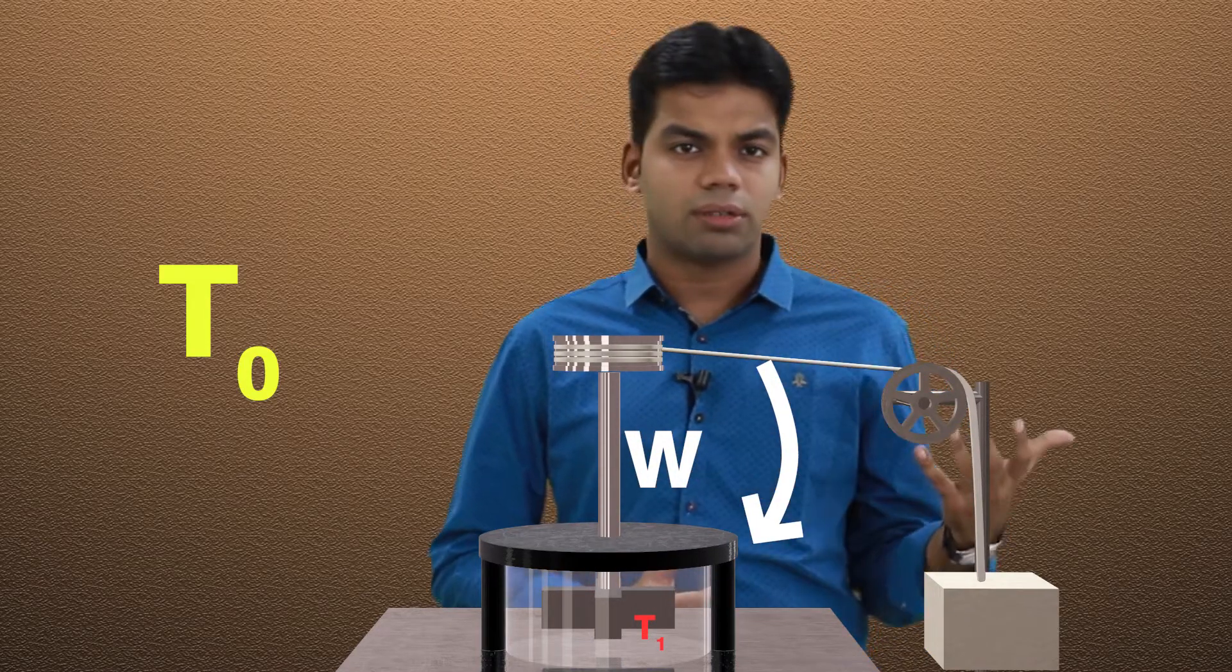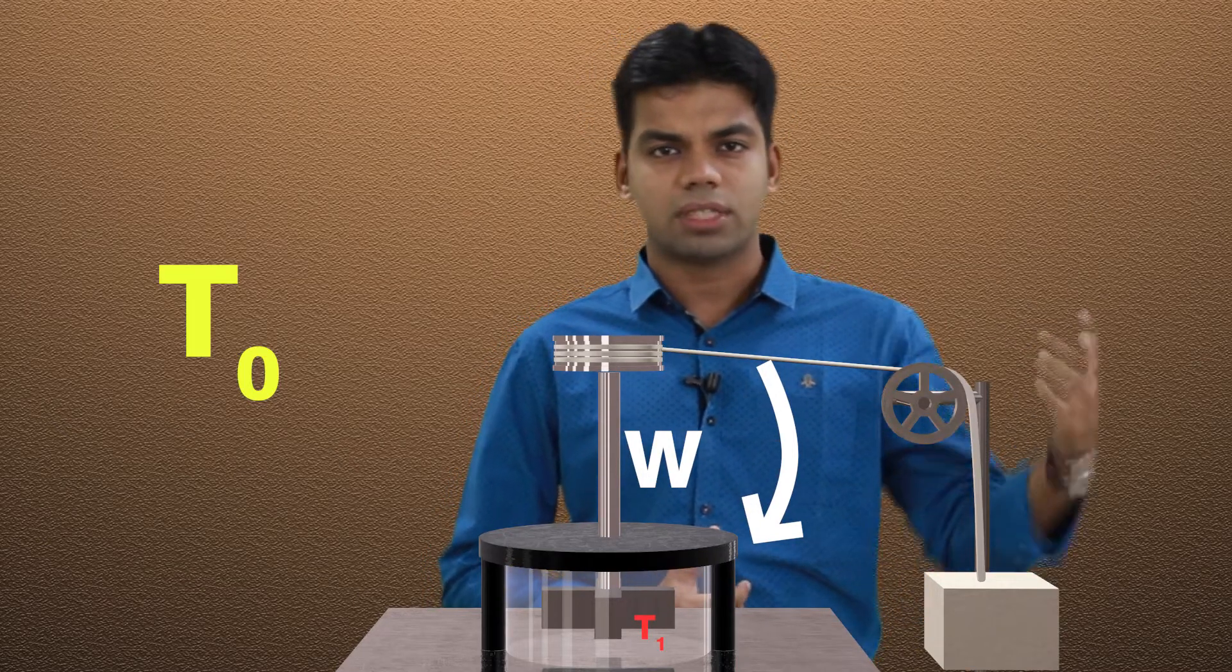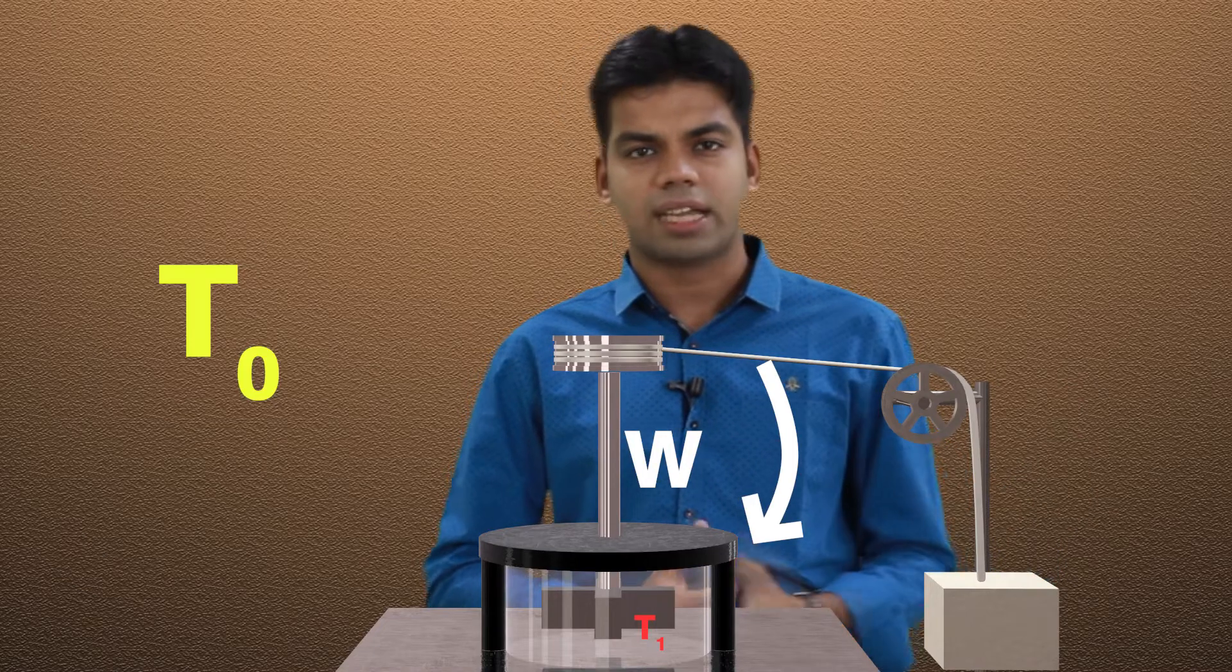As a result, he measured the work done. Work done can be measured as total weight times the distance dropped, that means mg into the height h it is dropped. The total work done on the system can be measured from that.